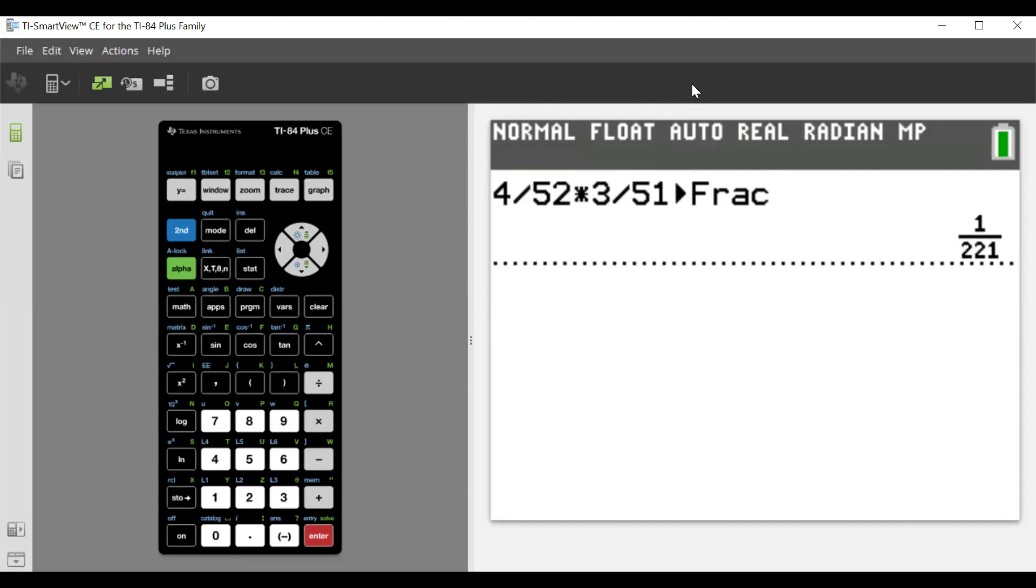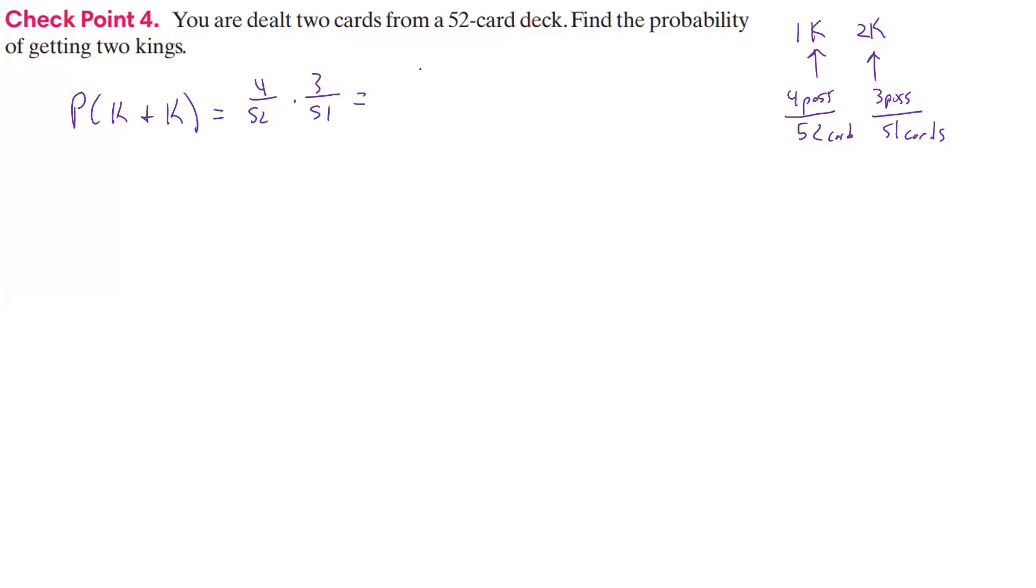So that tells us this is 1 over 221. That's the probability of two cards being dealt to you and getting two kings.